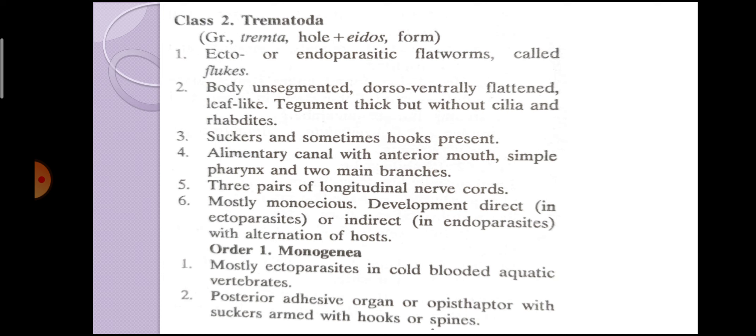Today we will study the second class of Phylum Platyhelminthes, which is called Trematoda. Trematoda is a Greek word where 'trimta' means hole and 'edos' means form. Trematoda are called ecto- or endoparasitic, and they are called flukes.